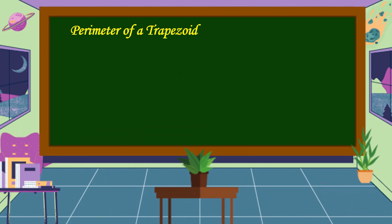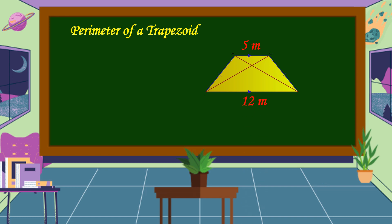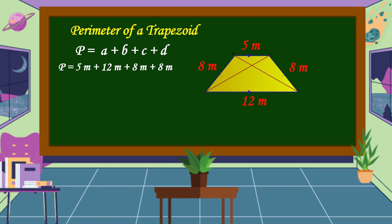Next, we're going to solve the perimeter of a trapezoid if base 1 is 5 meters, base 2 is 12 meters, and the sides are 8 meters each. The formula is P = A + B + C + D. Substituting: 5 meters plus 12 meters plus 8 meters plus 8 meters is equal to 33 meters. This is the perimeter of the trapezoid.